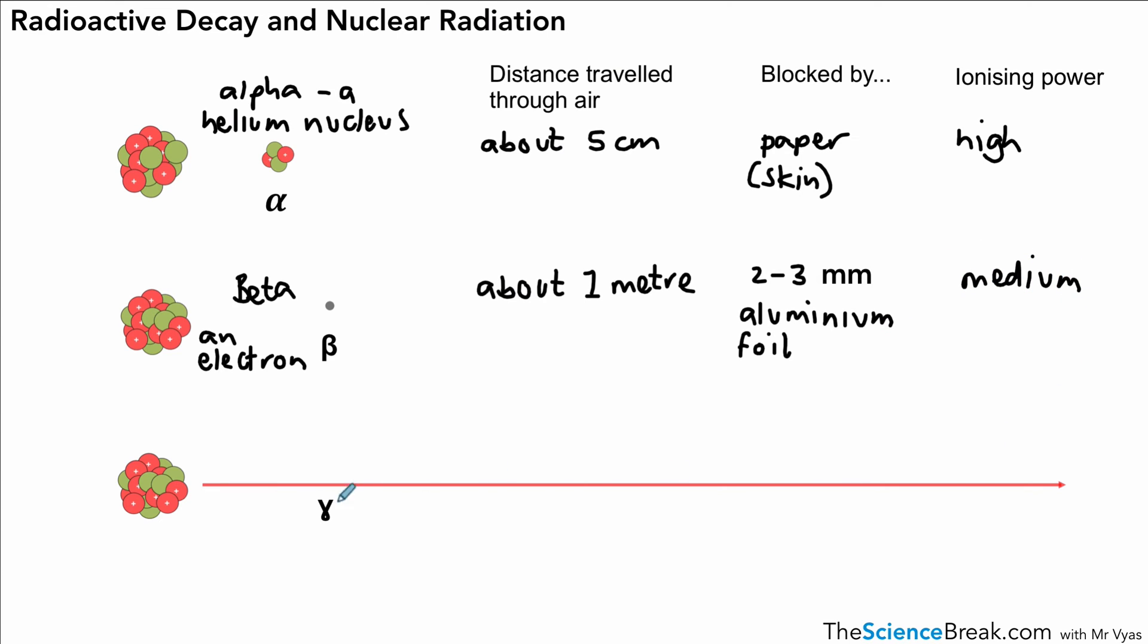In terms of our gamma rays, well, these can travel very, very far through air. Remember, gamma rays are electromagnetic waves or electromagnetic radiation. They could travel very far in air—we would say at least one kilometer through air. They would need about at least 10 centimeters of lead in order to be blocked, and the ionizing power for those is low.